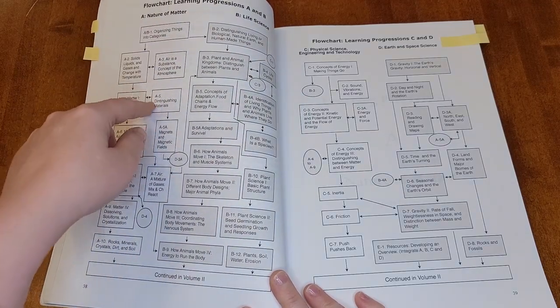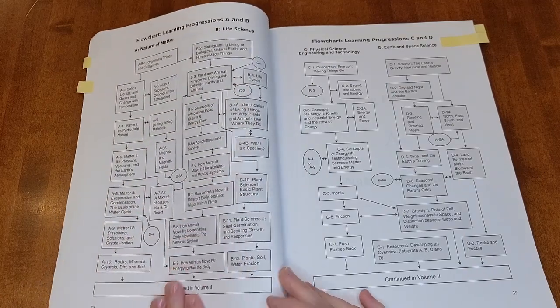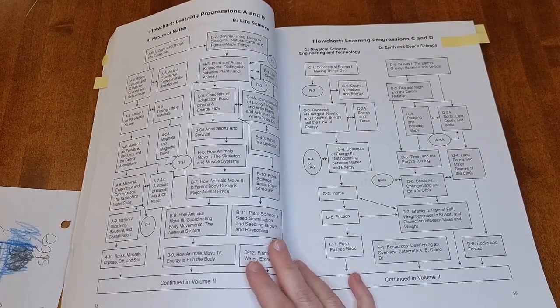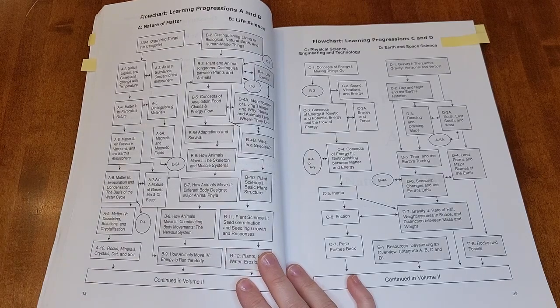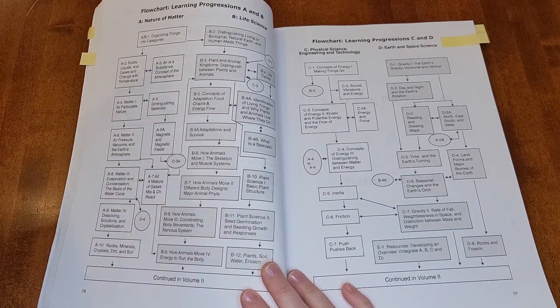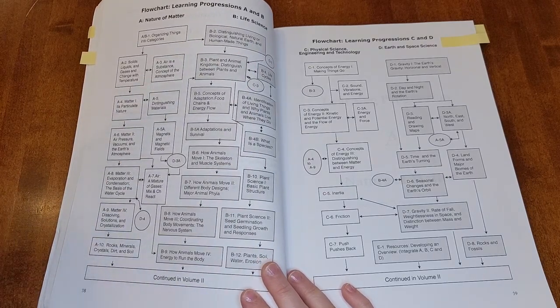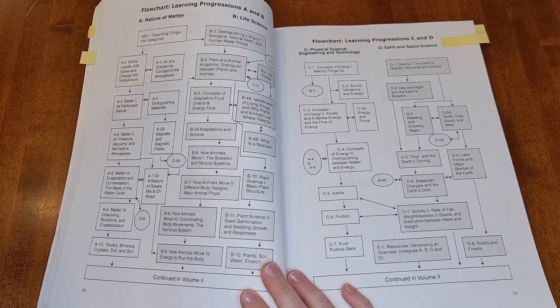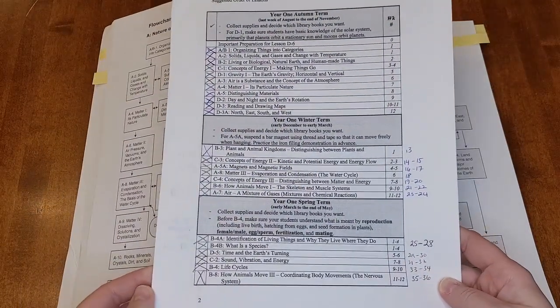Or you can go down until you reach a lesson that has prerequisites and jump over. I found both of those options confusing, especially when I was first starting out. So if you go to the Building Foundations of Scientific Understanding Facebook page, there are so many resources to help you do this program.